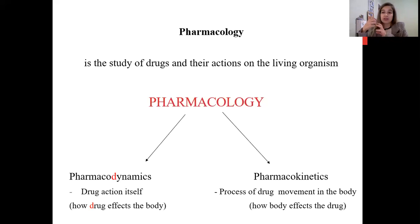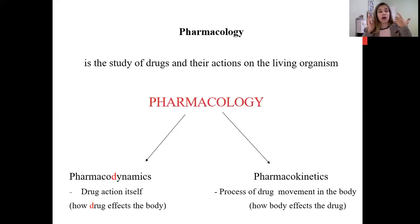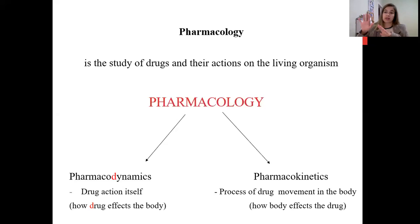Pharmacokinetics is different — it covers the process of movement of the drug and how the body affects the drug. For example, how the body slowly or quickly absorbs the drug, how it eliminates the drug — whether slowly or fast — through the urine via the kidneys or through exhaled air via the lungs. The body can also metabolize the drug through biochemical transformation and then eliminate it. All these processes are pharmacokinetics.